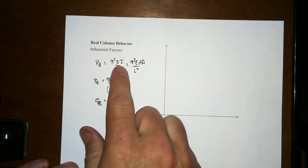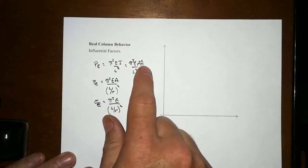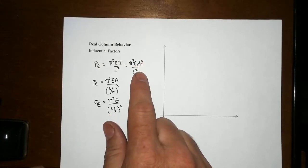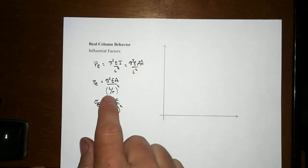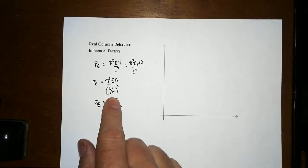If we use the basic geometric properties, we can rewrite the moment of inertia I as the radius of gyration squared times the cross-sectional area. That's convenient in a variety of ways. When we put R down in the denominator, we get length over the radius of gyration.